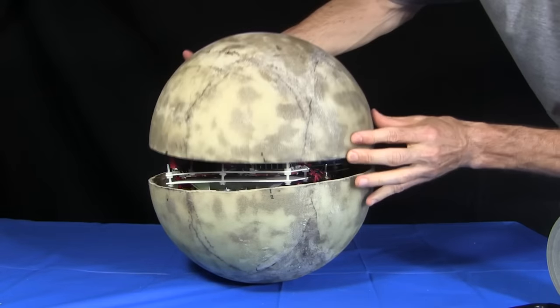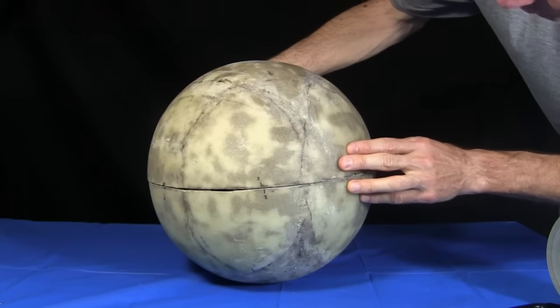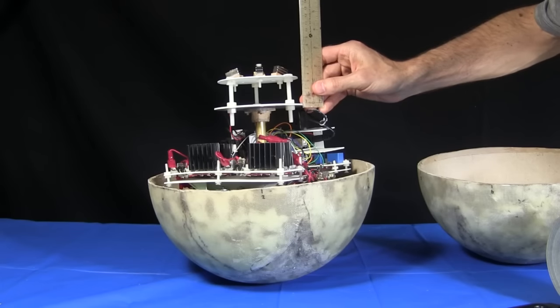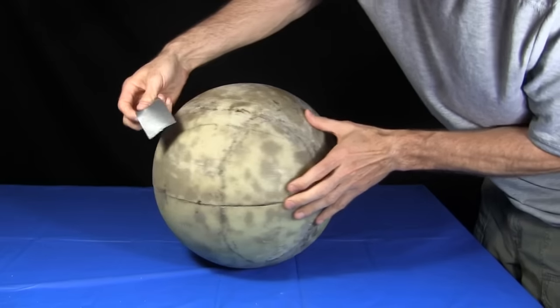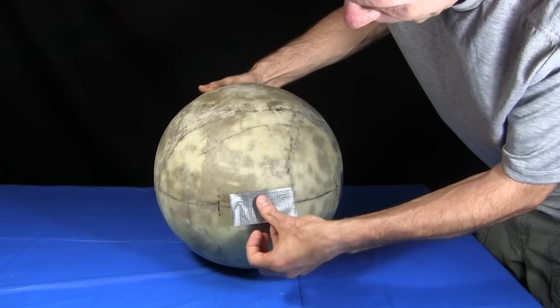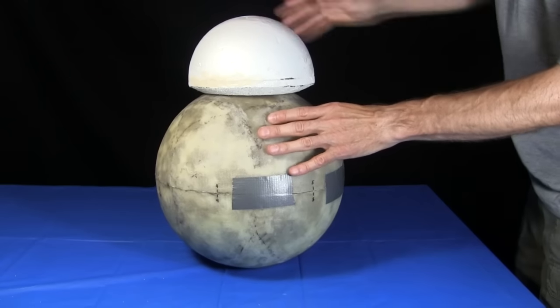But I raise the magnets again, until I can almost close the ball, but not quite. I measure the distance between the support plates. I basically keep adjusting the height of the magnets until the hemispheres close, and I don't think the magnets will rub inside. Notice that the head stays on fairly well.